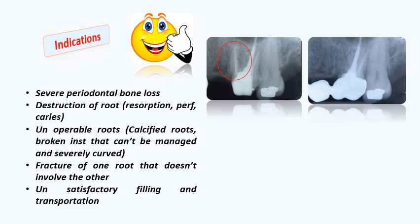In the image shown, a molar with a poorly-filled root and transportation that had retreatment but showed persistent infection and pocketing. A root resection was performed — the root was removed — and the tooth was then used as an abutment after recontouring, functioning normally.